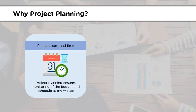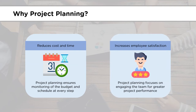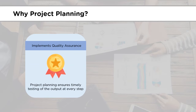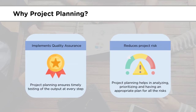Project planning reduces the cost and time of the project as every step is monitored and optimized in the best possible manner. Project planning increases employee satisfaction as every employee who is part of it is engaged in the team for improved project performance. Project planning helps in the implementation of quality assurance as the output of every step is duly tested. Lastly, project planning helps in reducing project risk as planning helps to analyze, prioritize, and deal with risk.